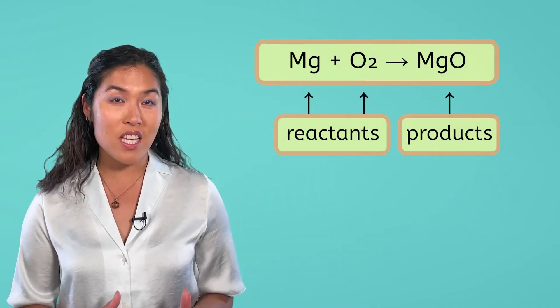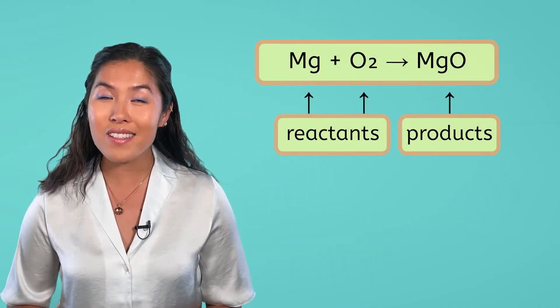The standard format for a chemical equation is to write the reactants on the left connected by addition signs, then an arrow pointing from left to right, followed by the products connected by addition signs. When reading a chemical equation, you use the word yield for the arrow. For example, magnesium plus oxygen yields magnesium oxide.